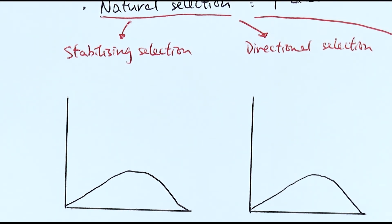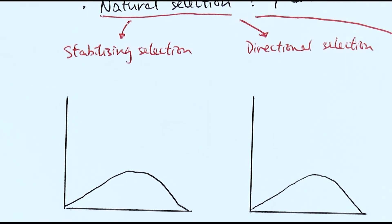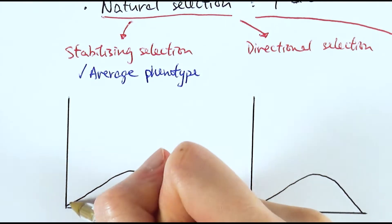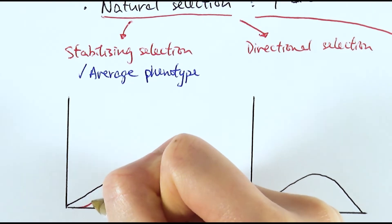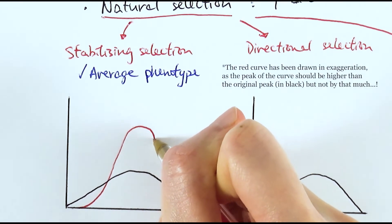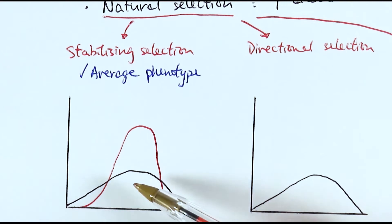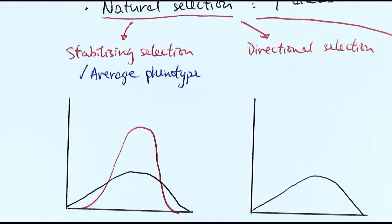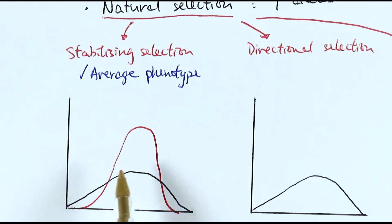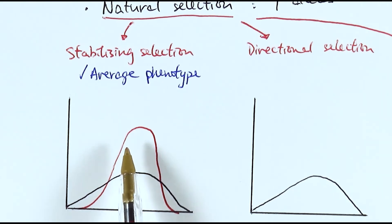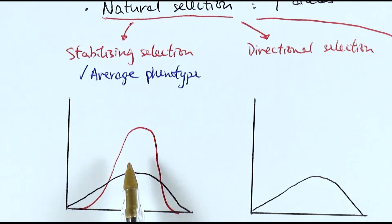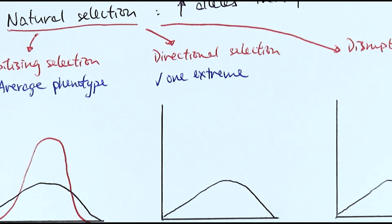In stabilizing selection, the average phenotype is selected. There is a shift in the distribution where there are fewer individuals with extreme phenotypes but more with the average one in the middle, so the distribution curve spikes in the middle. An example is babies with different weights — babies that are underweight or overweight are less likely to survive and reproduce, so more babies with normal weight survive, passing on that gene, shifting the population toward normal weight.